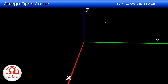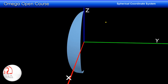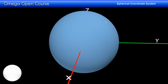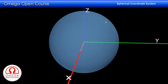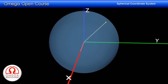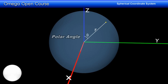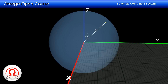Let there be a point in the space. Now let us draw a sphere with center at the origin such that it passes through the point. The first parameter is the radius of the sphere — if you draw a line from the origin to the point, the first parameter is the length of this line and is usually represented by r. The second parameter is the angle this line makes with the z-axis, called the polar angle, and it is usually represented by theta.